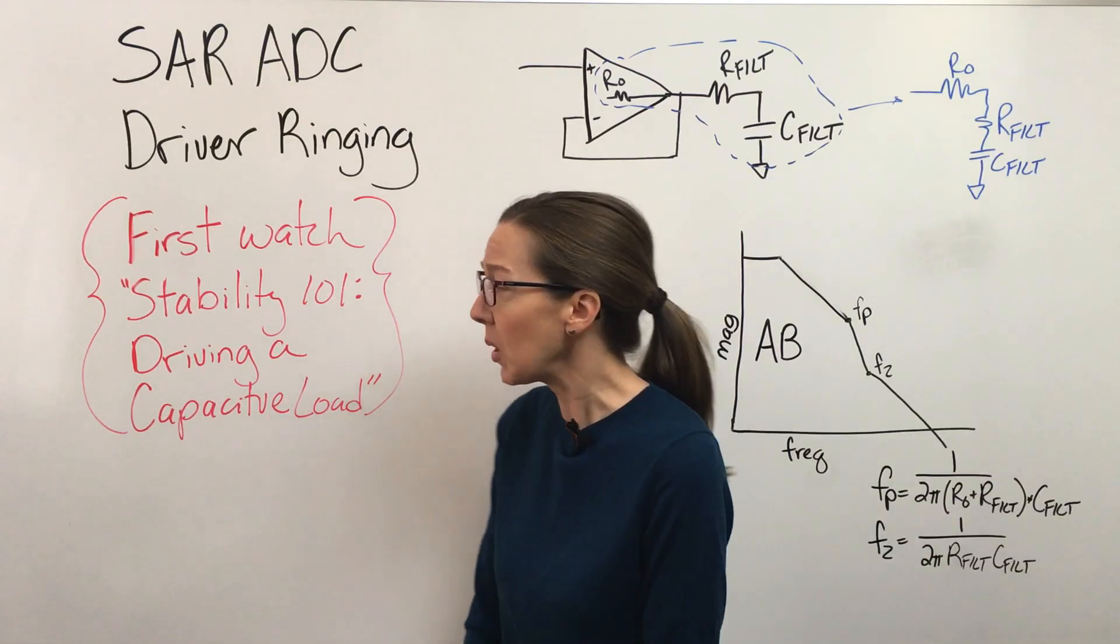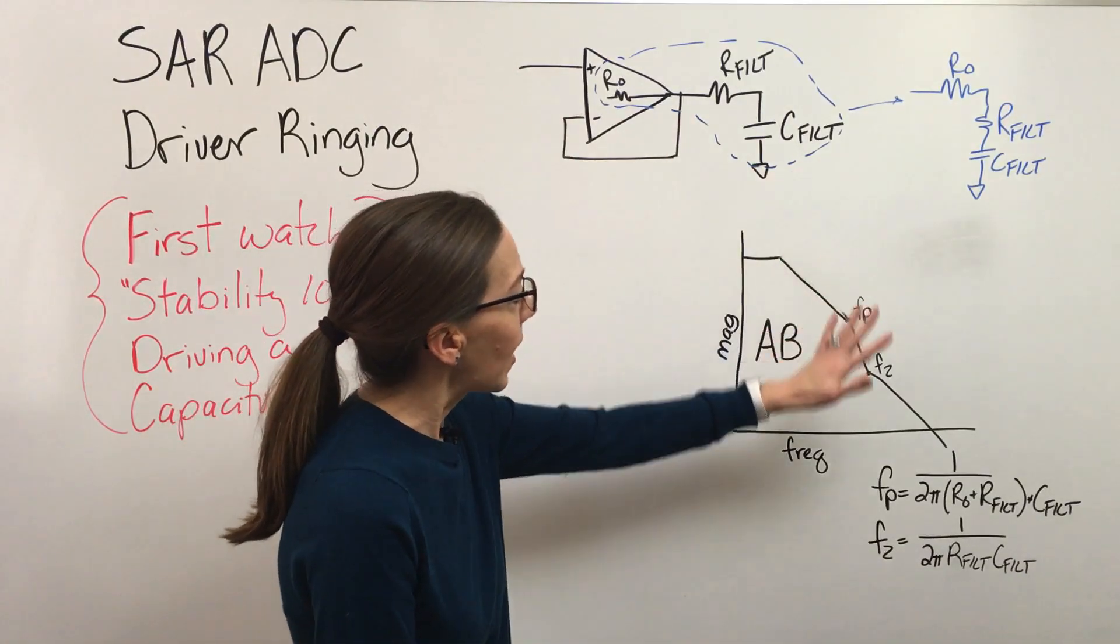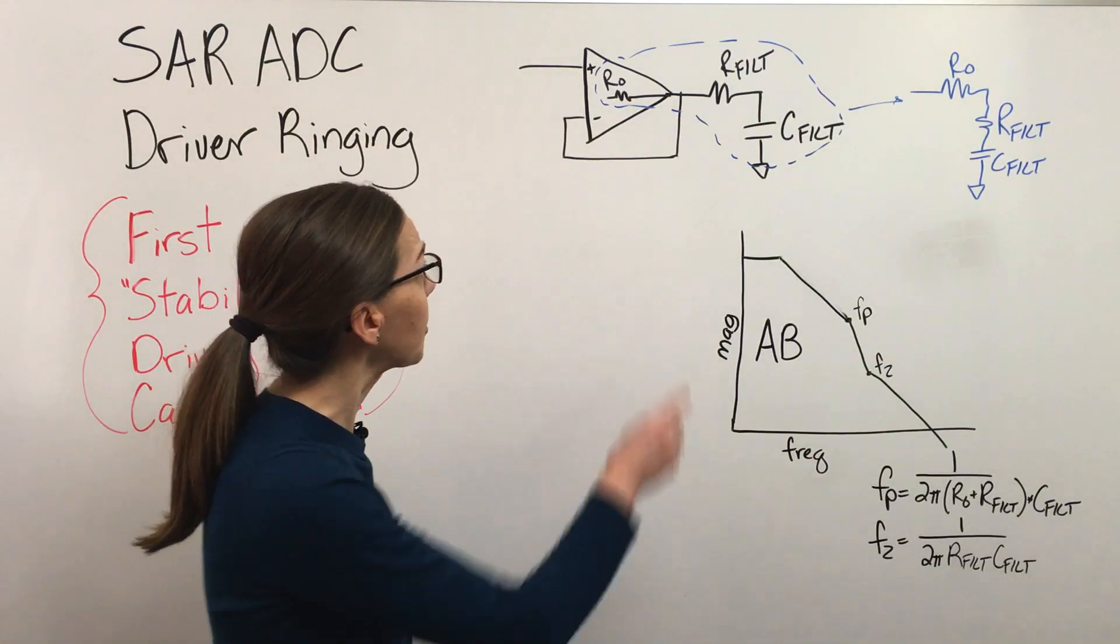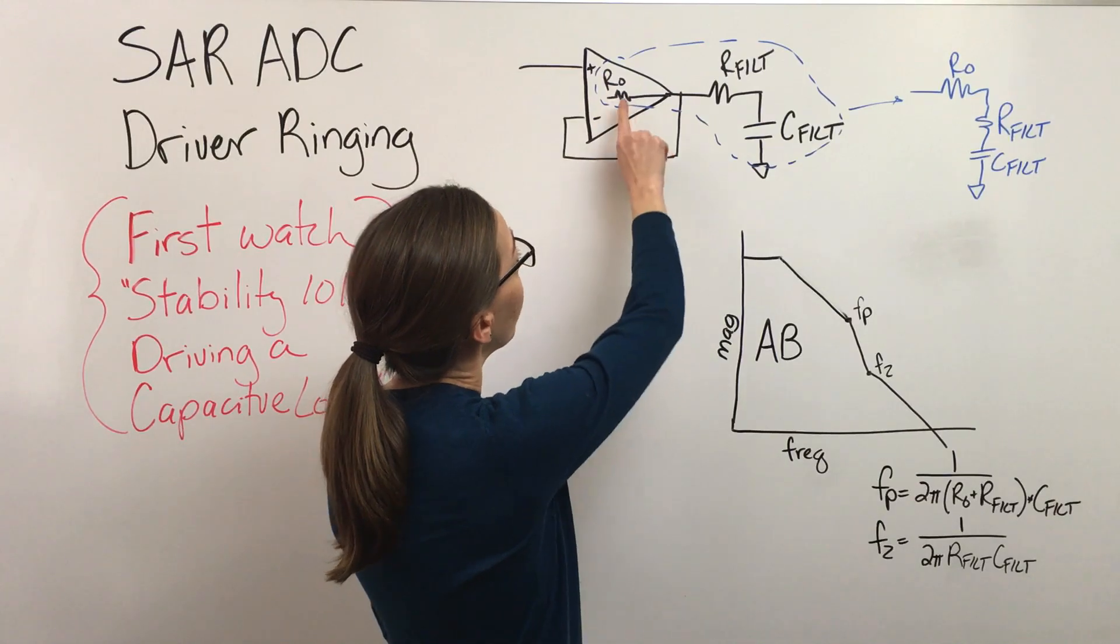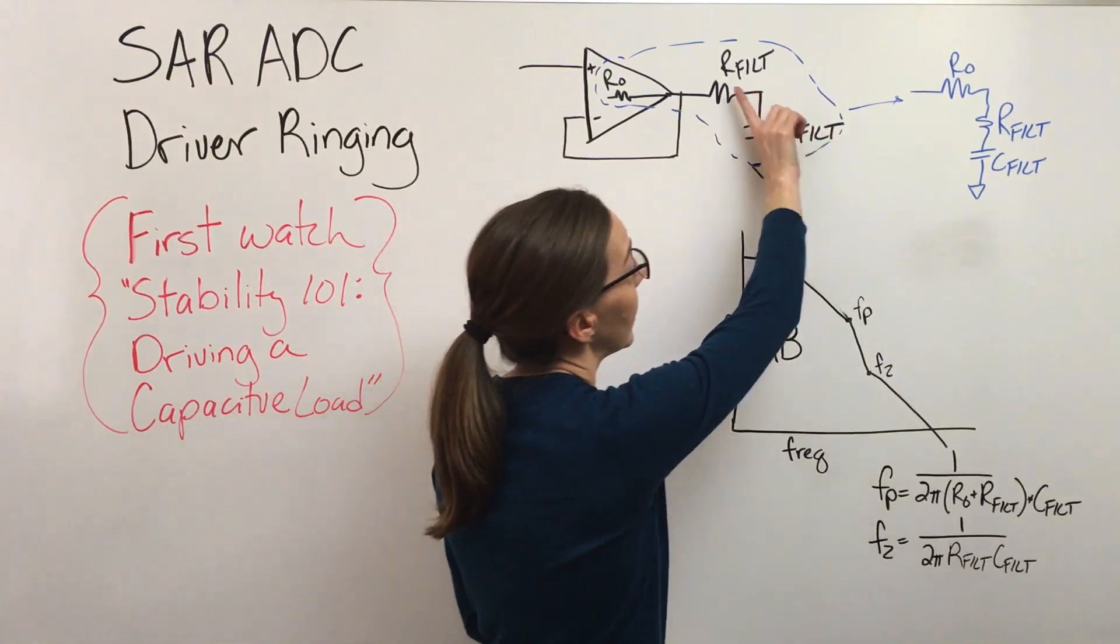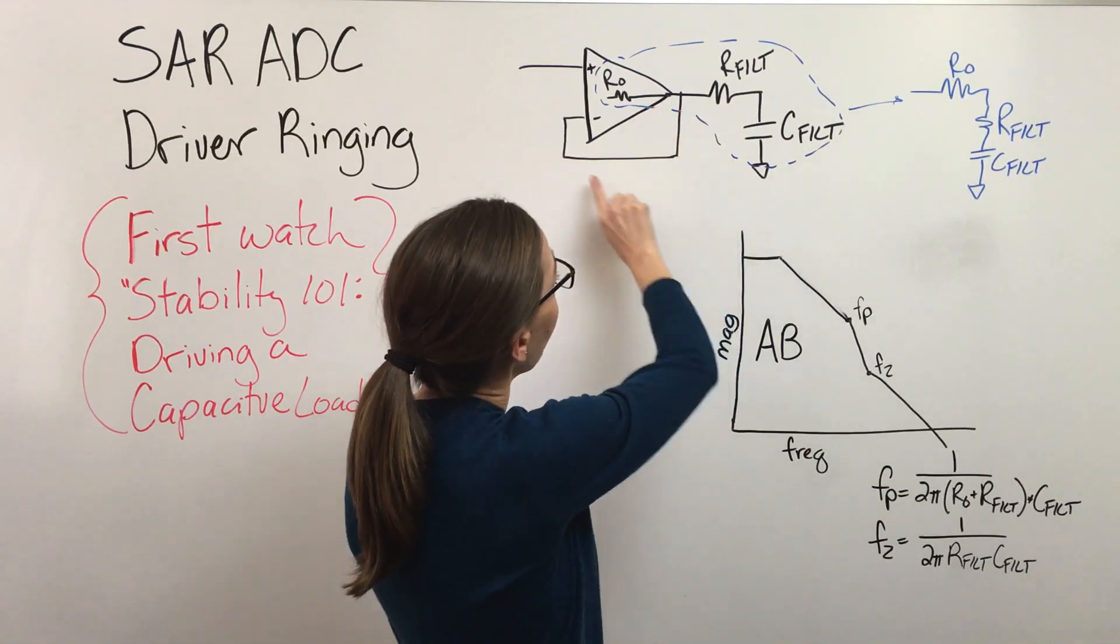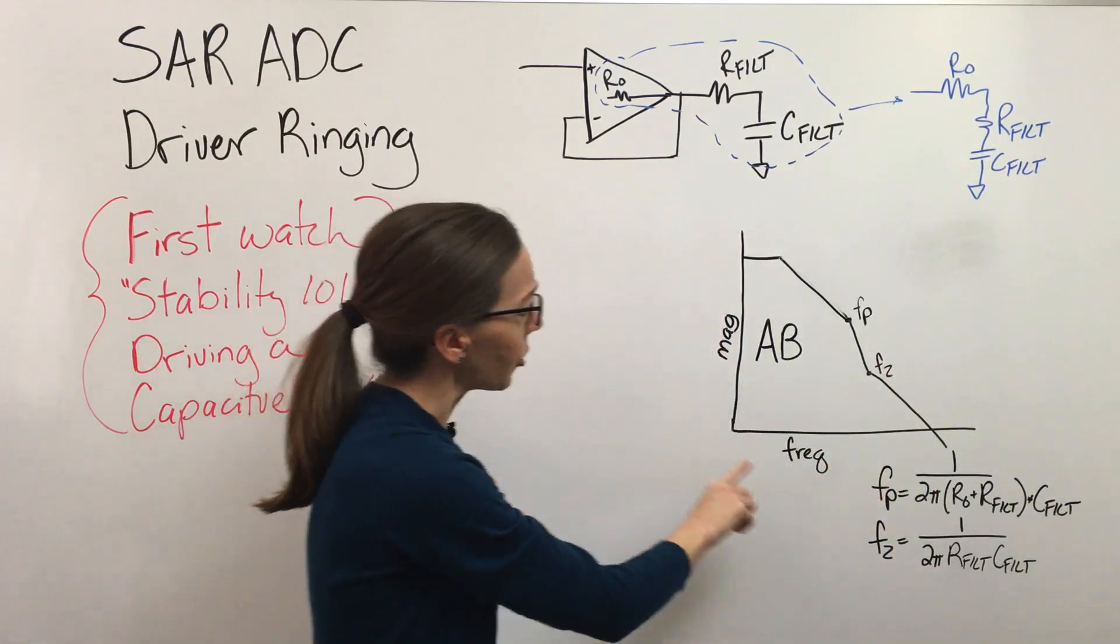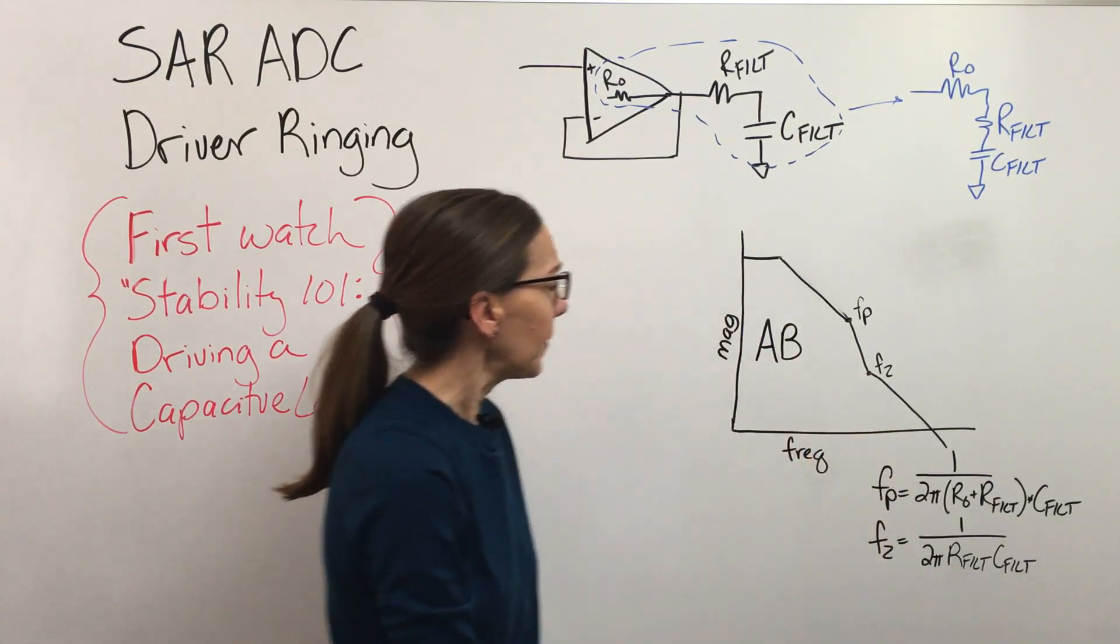Matt does a very good job with this topic. So at the end of that video, this is what he's got on the board for the most part. I've renamed some things to fit with our discussions, but we've got this driver with the output impedance and we've got this RC filter that is going into the ADC. It's essentially, as far as this feedback loop is going, this is our feedback circuit here which determines a pole and a zero in our loop gain plot.